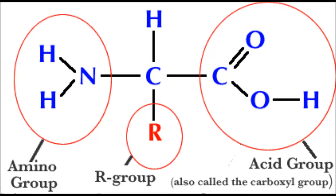This is the amino acid structure. In the center is a carbon. Off of that is the amino group, which has a nitrogen and two hydrogens.